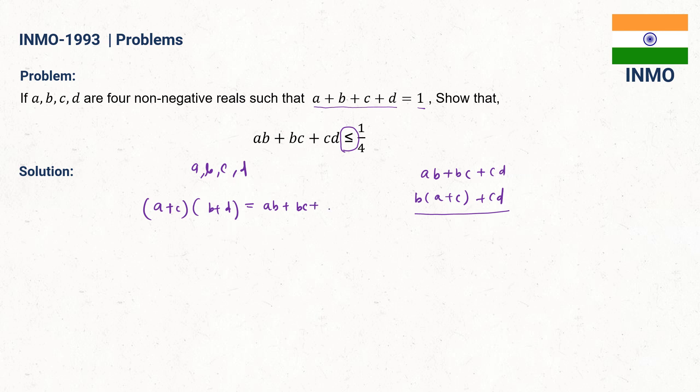As per the question, A, B, C, D are four non-negative reals. That means ABCD belongs to positive real numbers set. And also given A plus B plus C plus D is equal to 1.